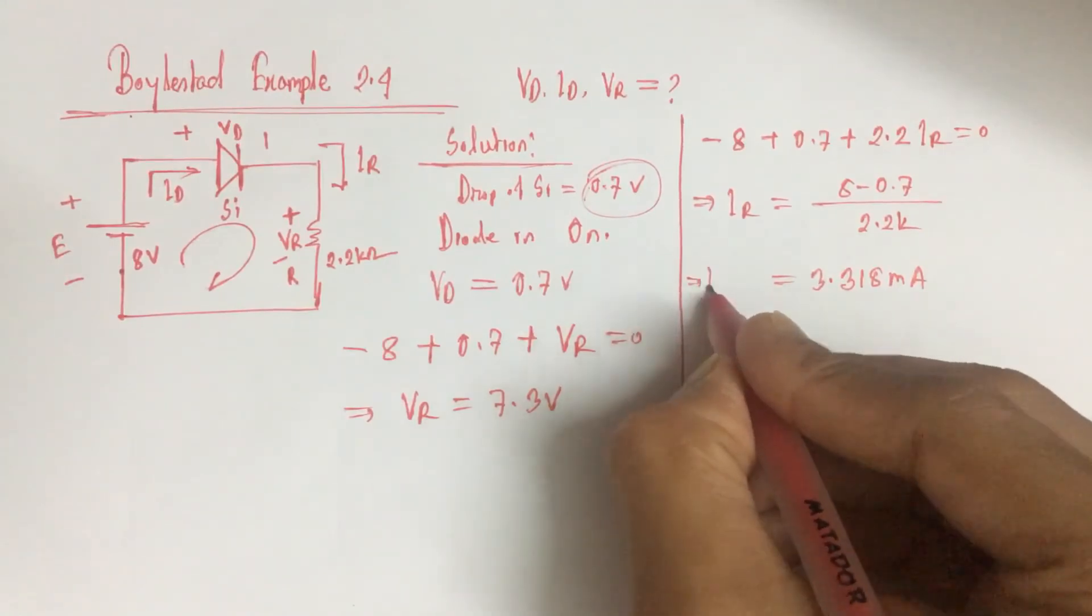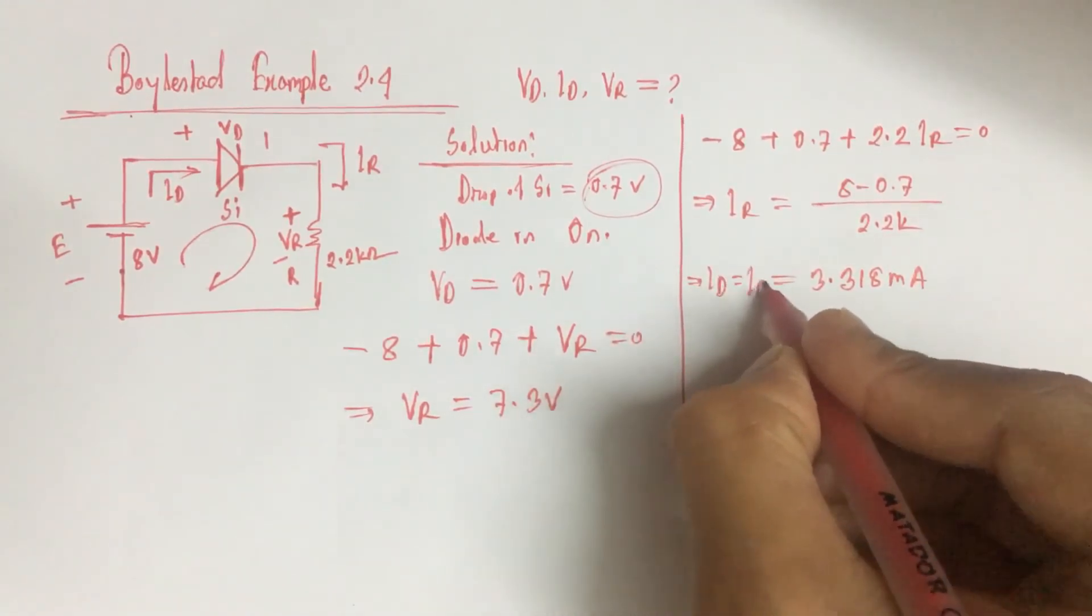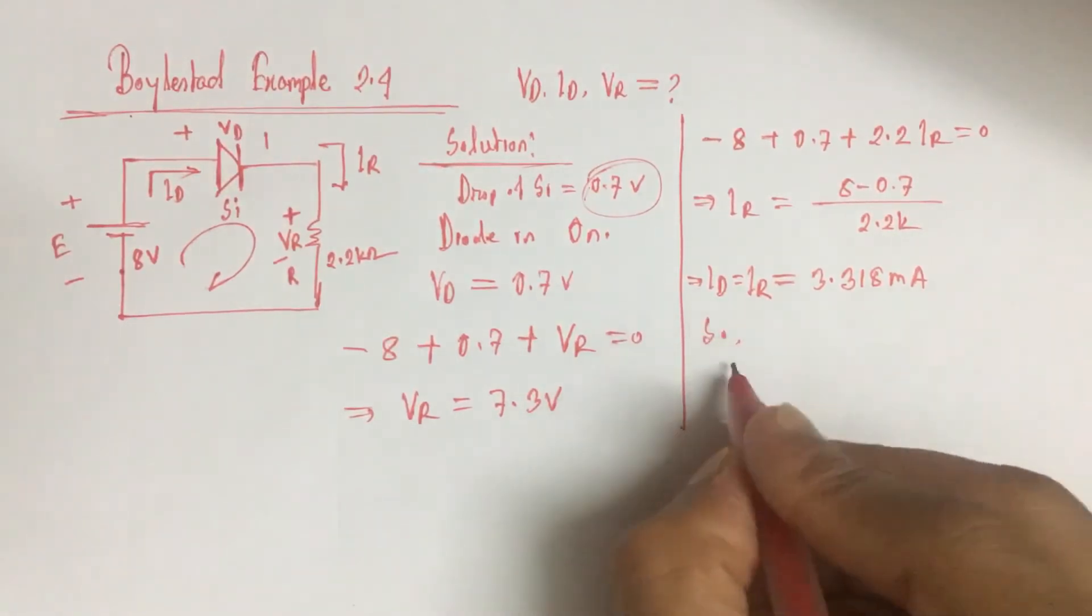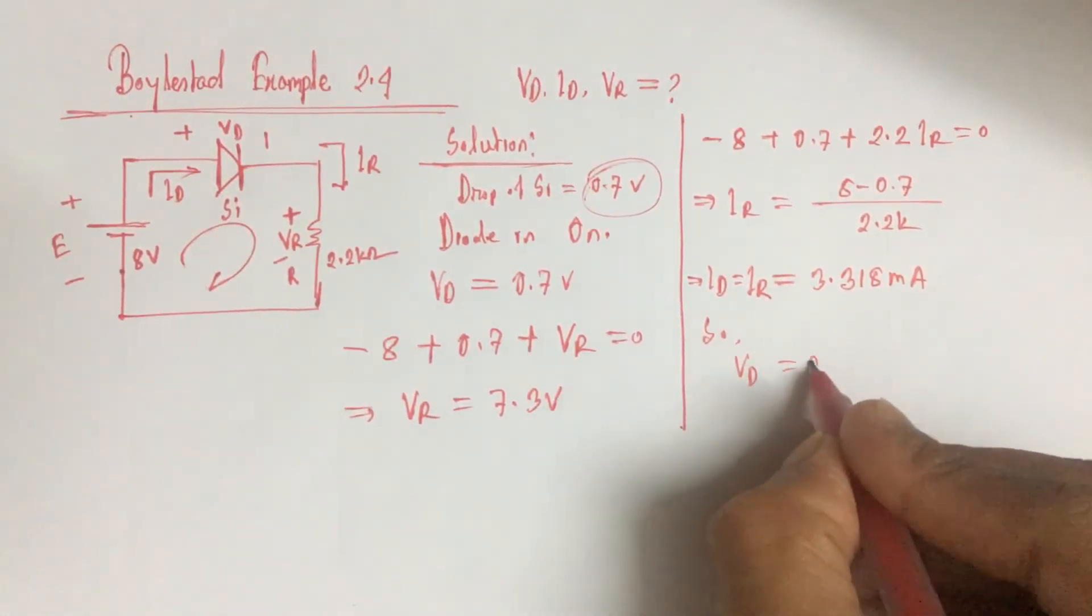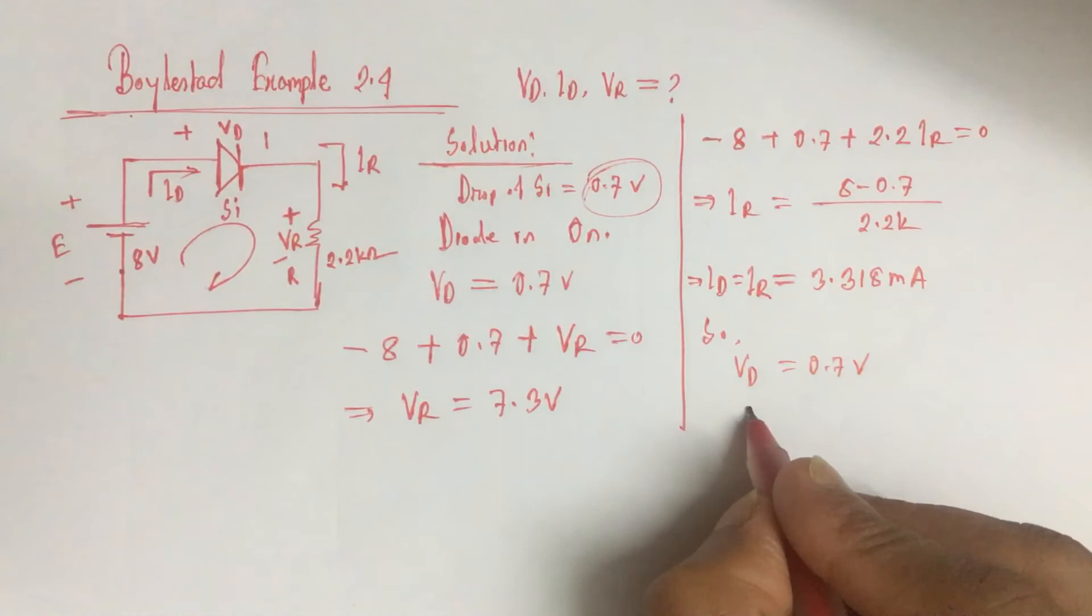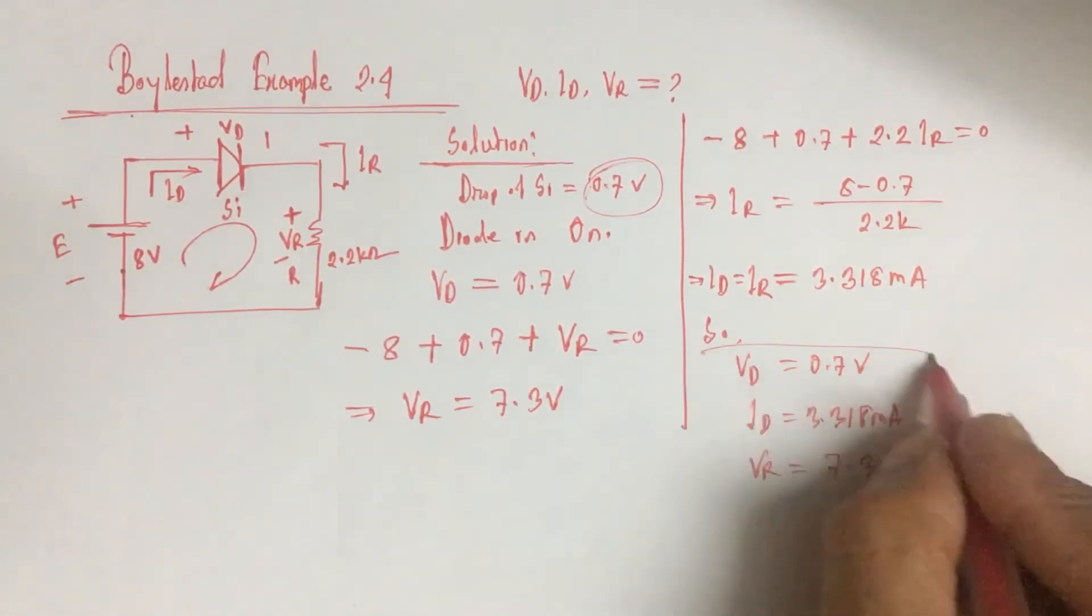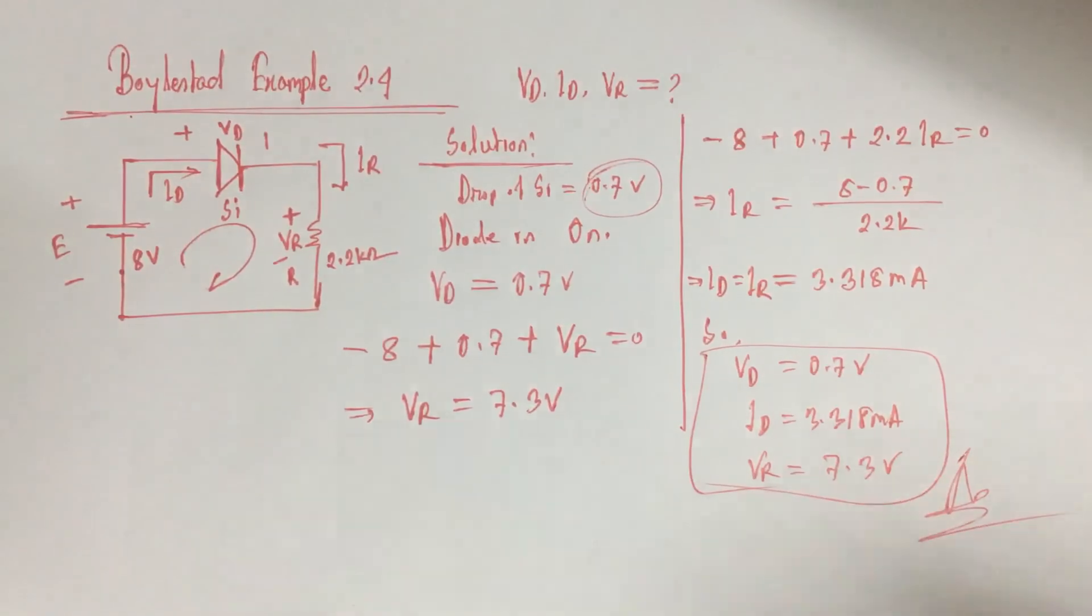So ID equals IR equals 3.318 mA. Therefore, VD equals 0.7 volt, ID equals 3.318 mA, and VR equals 7.3 volt. This is the answer. Thank you.